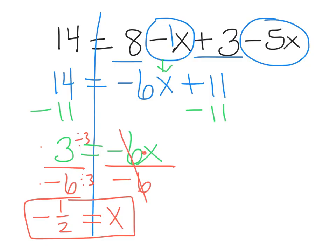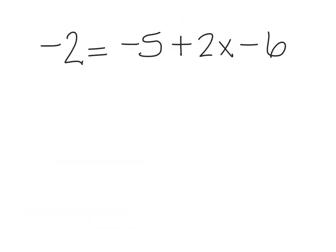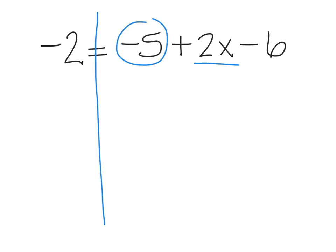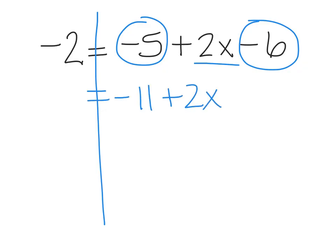We're going to take a look at one more example. Again, we're going to draw our wall and put together our like terms. This time, I only have one set of x's, so I'm actually going to put together my constants first. Negative 5 and negative 6 is negative 11. I'm going to bring down the plus 2x and bring down my negative 2.